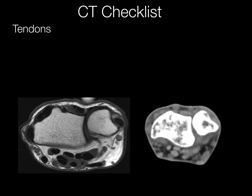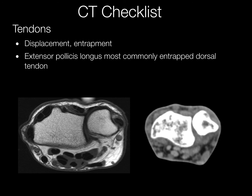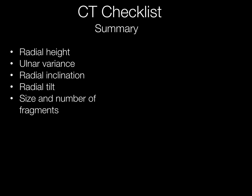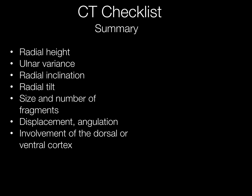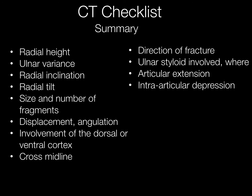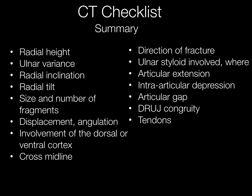The soft tissues are important to look for in these CTs, and for this we have to turn to the soft tissue algorithm or kernel. We want to look for displacement and entrapment. The extensor pollicis longus is the most commonly entrapped dorsal tendon, and to identify it we can use Lister's tubercle as a landmark. In summary, the things we want to look for are: radial height, ulnar variance, radial inclination and radial tilt, size and number of fragments, displacement and angulation, involvement of the dorsal or ventral cortex, whether the fracture crosses midline, the general direction of the fracture, whether the ulnar styloid is involved and which part, articular extension, intra-articular depression and gap, DRUJ congruity, and soft tissue tendons.